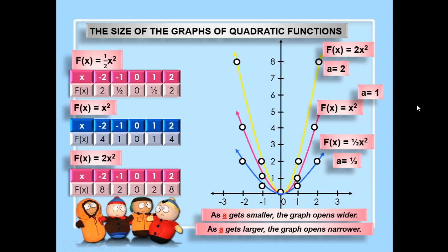In the function defined by 2x squared, our a is equal to 2, represented by the yellow graph. In the function defined by one-half x squared, a is equal to one-half, represented by the blue curve. We notice that all the values of a — which are 2, 1, and one-half — are all positive.